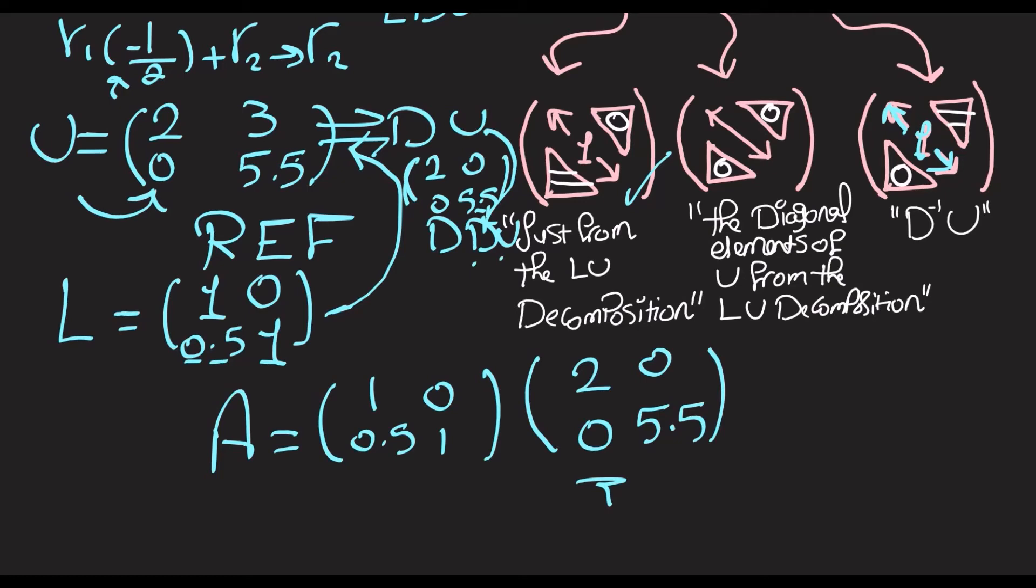Then multiplying it by U means... when you multiply a diagonal matrix, any diagonal matrix, by any other matrix, you're basically multiplying each element by the corresponding row.